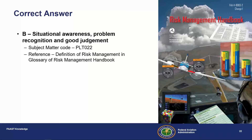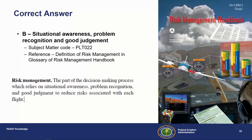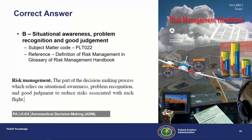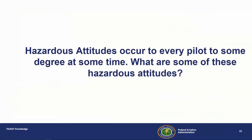The reference for that answer is subject matter code PLT-022. It comes specifically from the definition of risk management in the Risk Management Handbook. On the ACS, this question shows up as PA (private pilot airplane), Roman numeral I for the area of operation which is pre-flight, H is the subject area, and the knowledge element is aeronautical decision making.